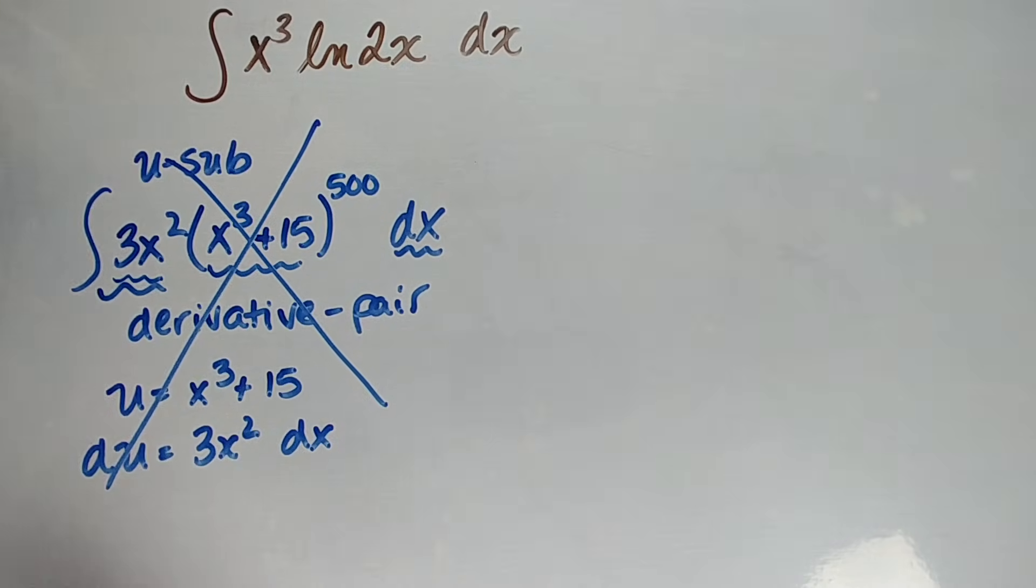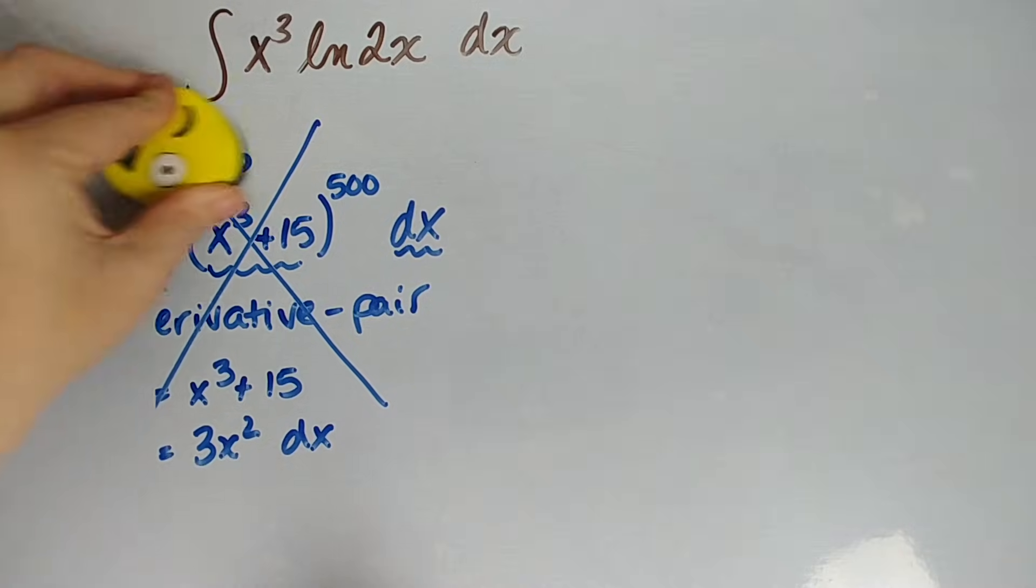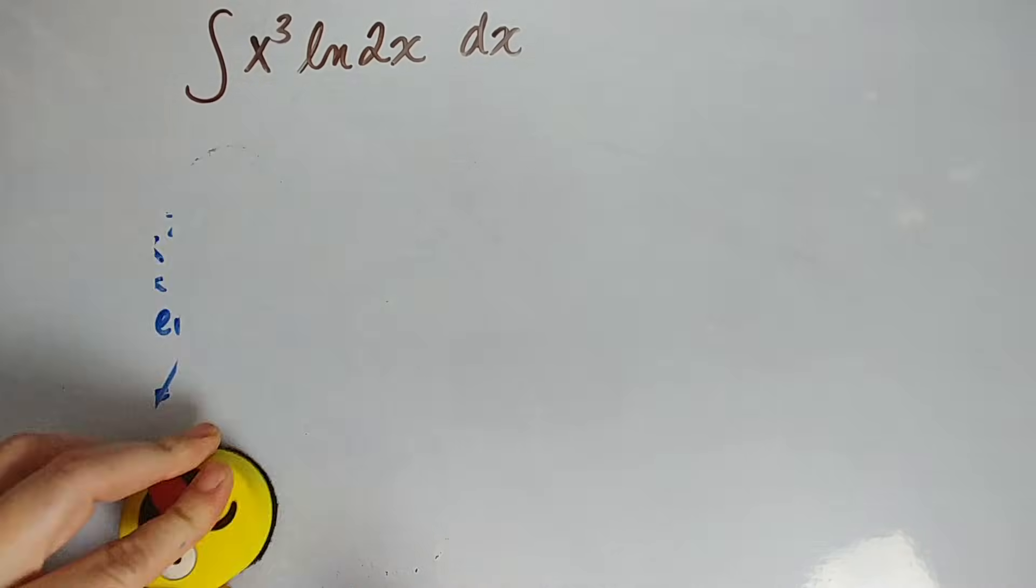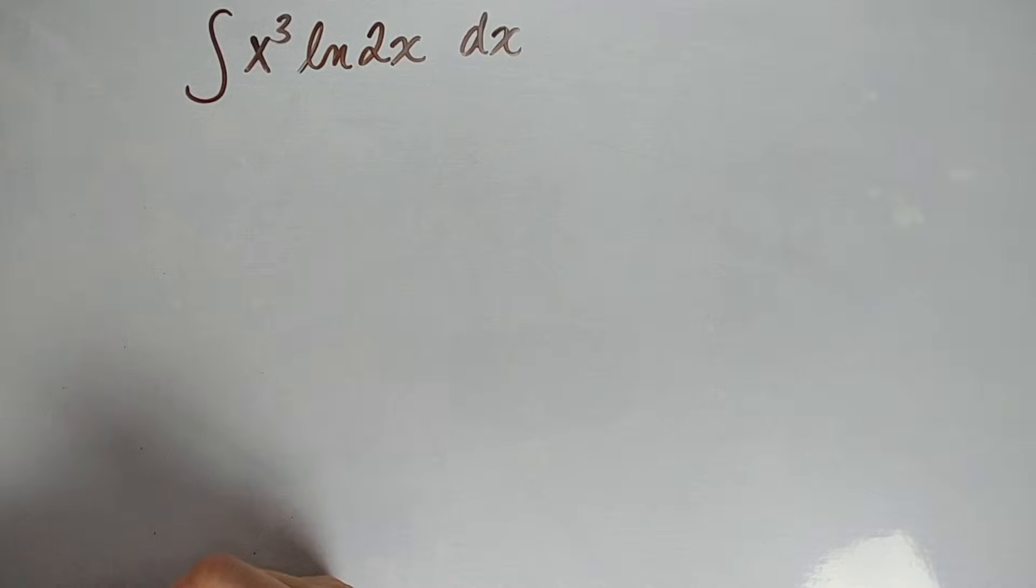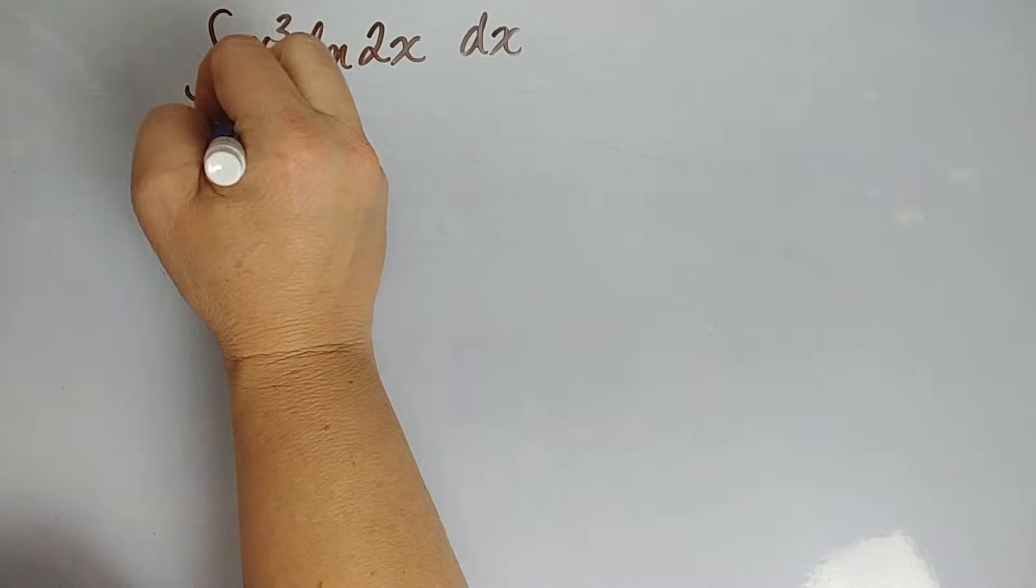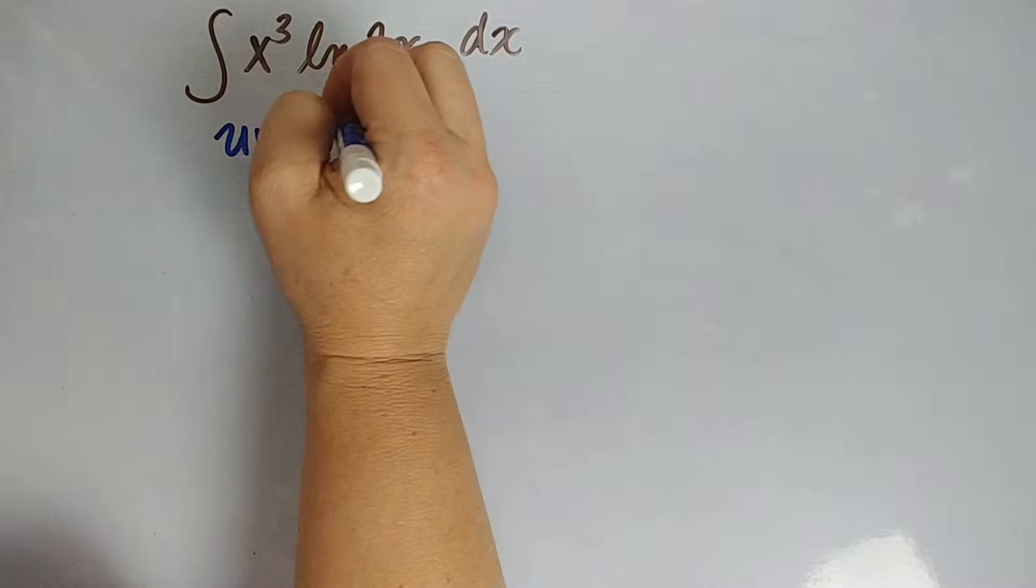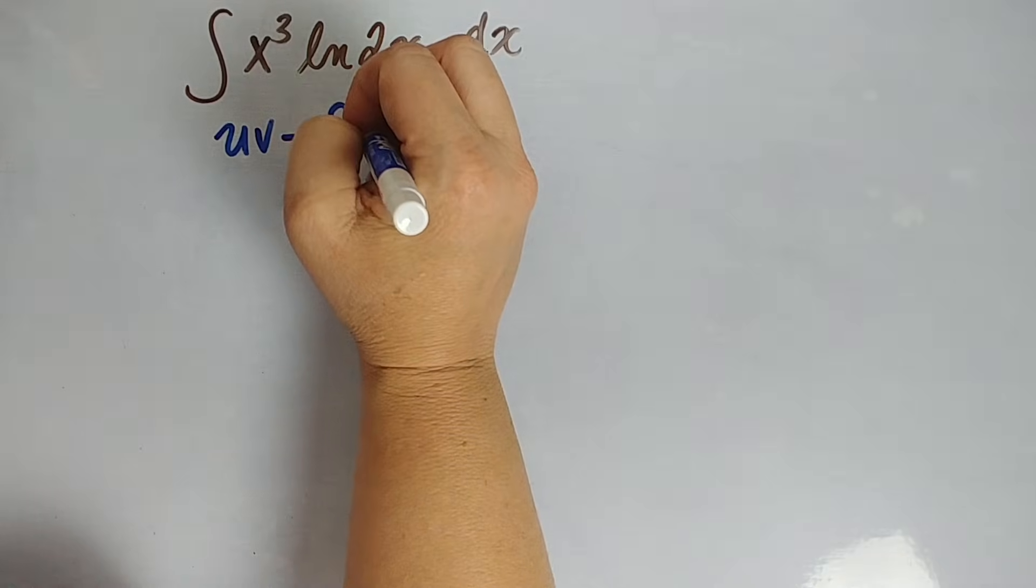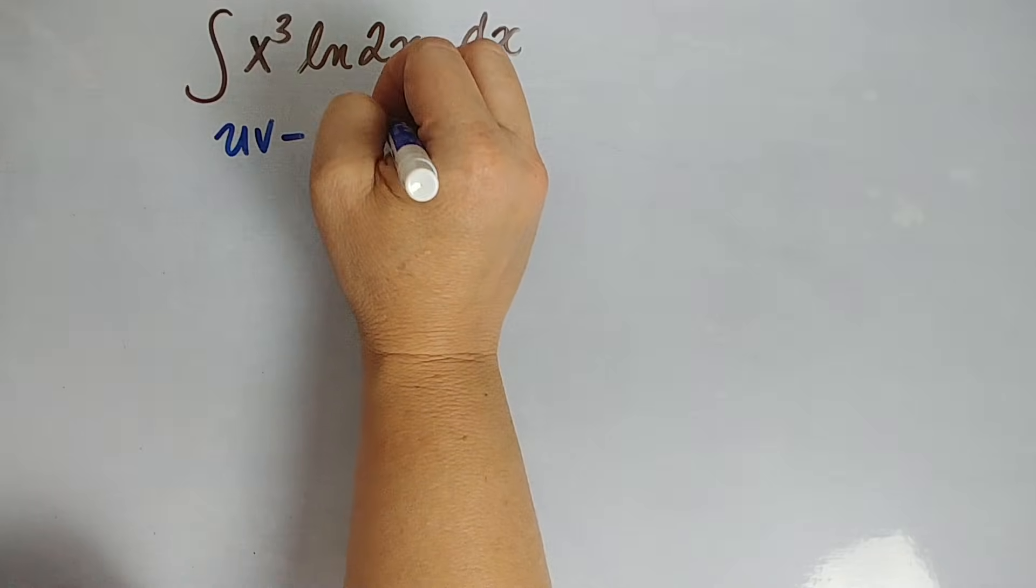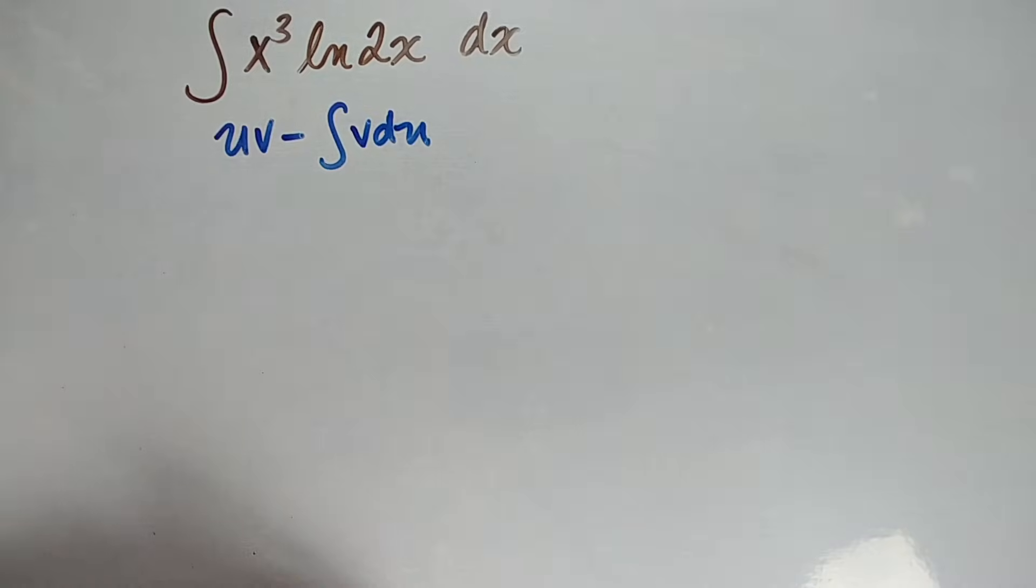So then I go to, if u-sub doesn't work, because u-sub is generally the first one we learn, maybe the first one you check, it is a little easier, so I tend to check that first. It's easier to look for a portion and a derivative pair. So then I'm going to go to my integration by parts. My integration by parts says uv minus the integral of vdu.